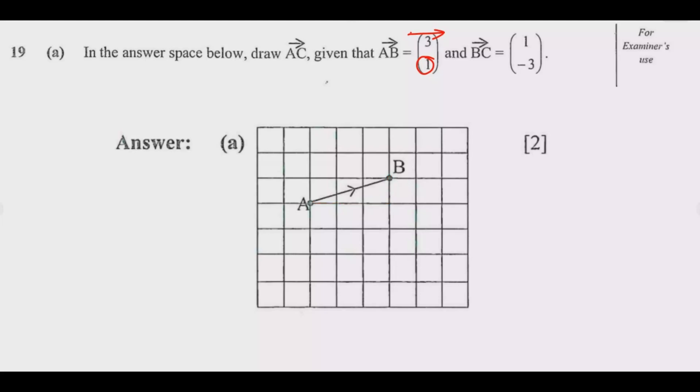Then we are given that BC is one step to the right, then three steps downward, which is the negative. So one step to the right, then three steps downward, which is up to here. So this becomes BC.